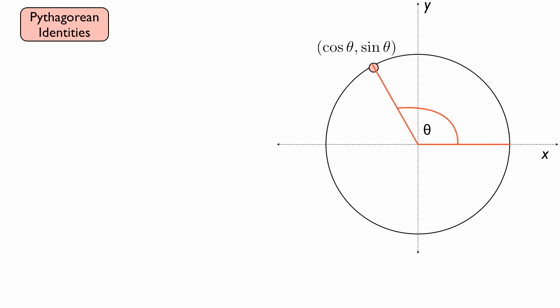So let's start again with a unit circle, and we have an angle theta and a point formed by that angle, cosine theta, sine theta, that lies on the unit circle.